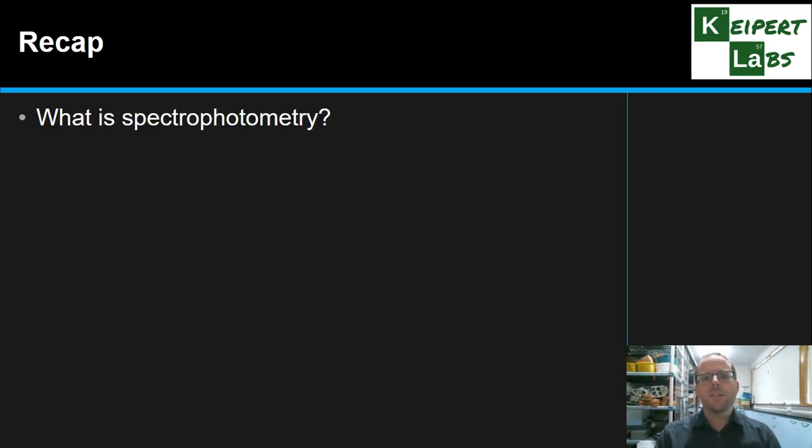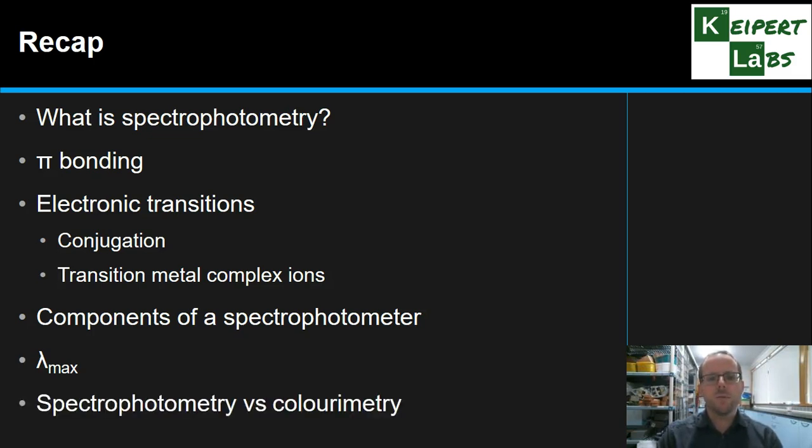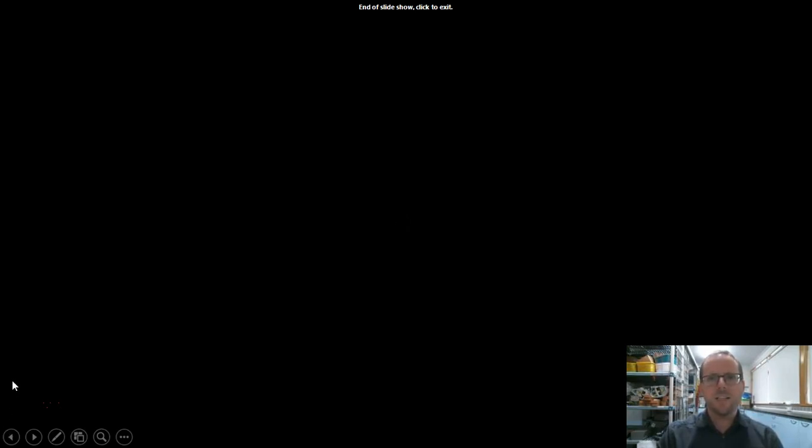So we looked at the concept behind spectrophotometry. We looked at some of the underlying scientific ideas of pi bonding, that is the electrons used to make double bonds in a structure. We looked at conjugation and transition metal complex ions and seeing the different possible transitions or jumps that an electron can make in a molecule and seeing how that correlates to the amount of energy it would absorb to actually make that jump. We looked at the components of a spectrophotometer and seeing how the instrument is put together. We looked at the concept of lambda max, the way we get maximum absorbance, and we compared spectrophotometry and colorimetry. Thanks very much for watching. Don't forget to like and subscribe. Bye for now.